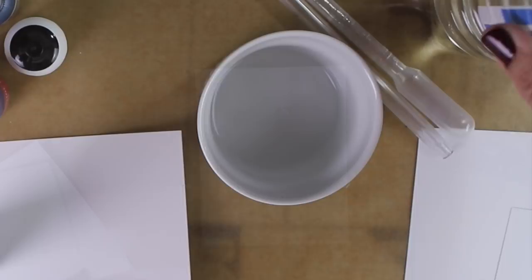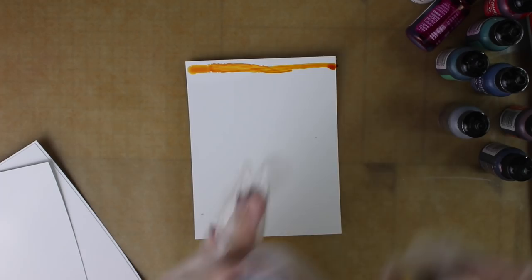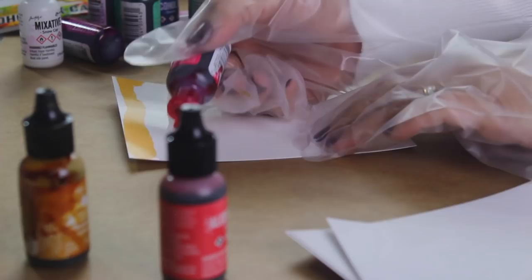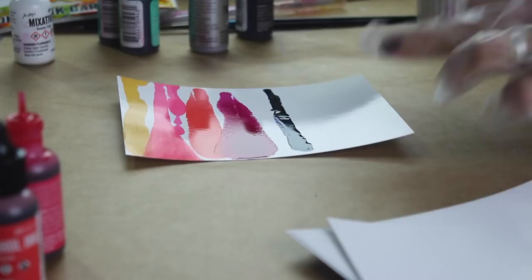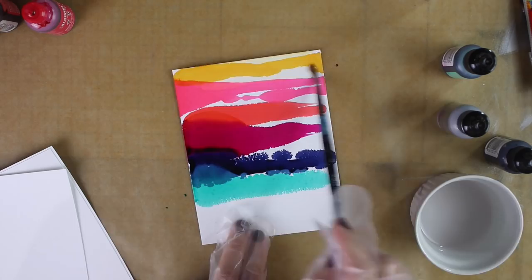So for the first background all I'm going to do is to apply the ink directly on the paper like so and then I'm going to dab my brush on that blending solution and I'm going to apply the blending solution over the ink just to make it move a little bit.